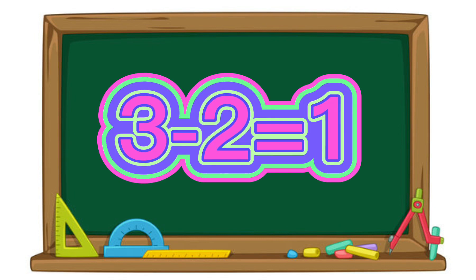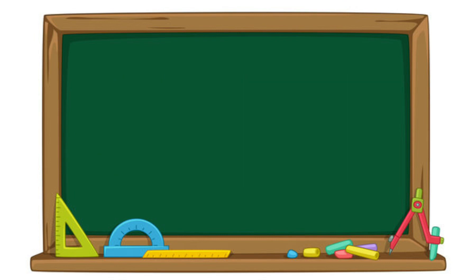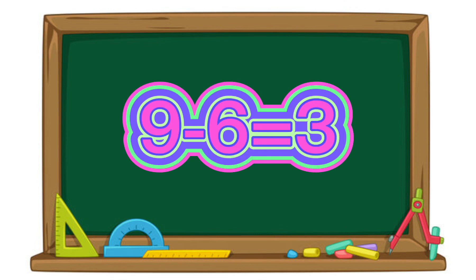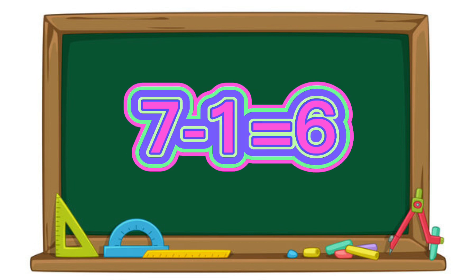3 minus 2 equals 1. 6 minus 4 equals 2. 9 minus 6 equals 3. 7 minus 1 equals 6.